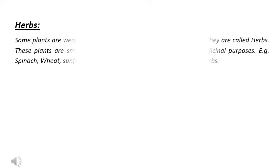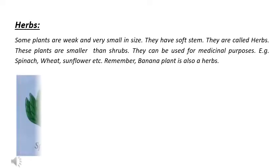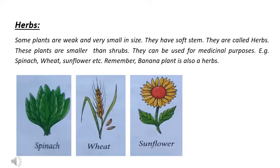Now, we will discuss about herbs. Some plants are weak and very small in size. They have soft stems. They are called herbs. These plants are smaller than shrubs. They can be used for medicinal purposes. For example, spinach, wheat, etc.